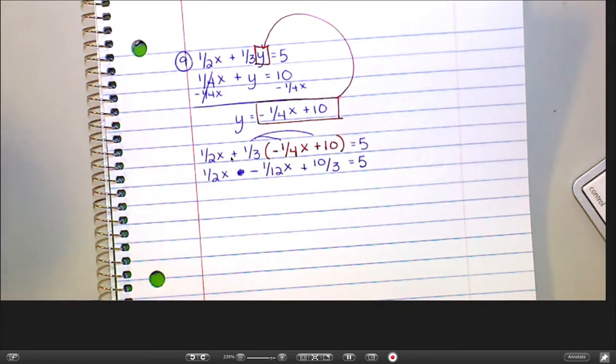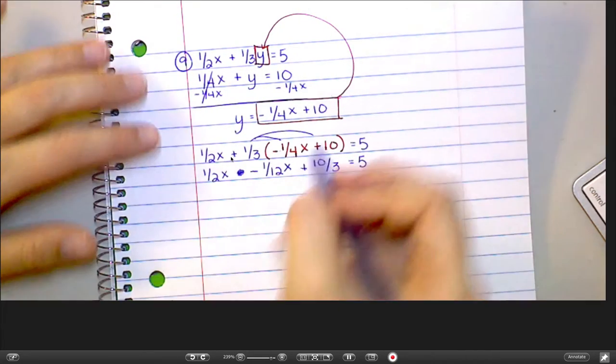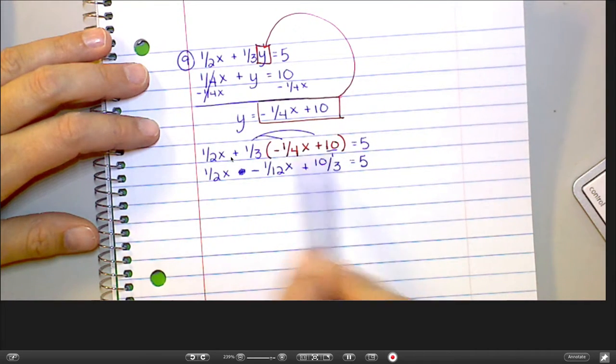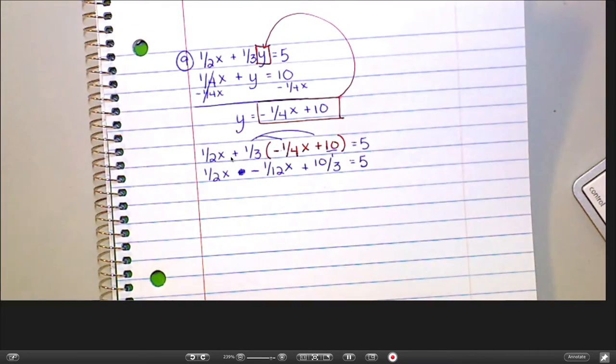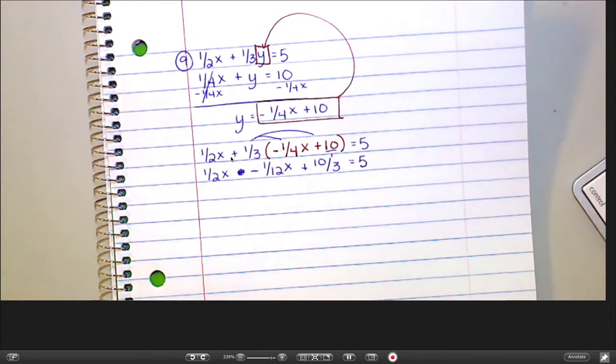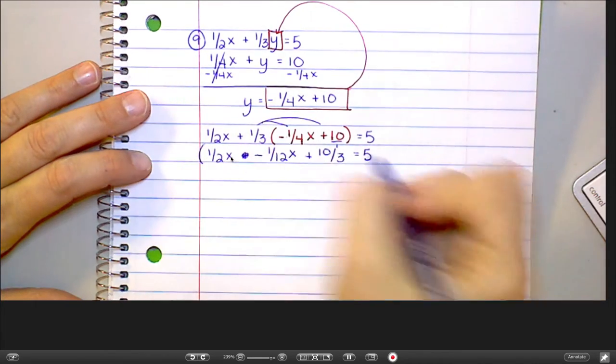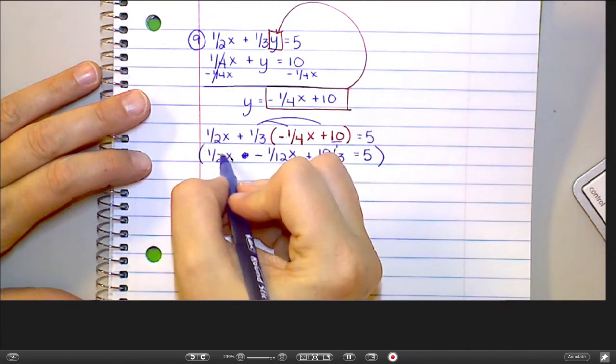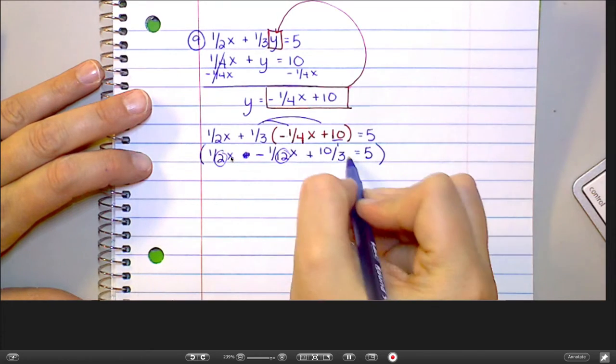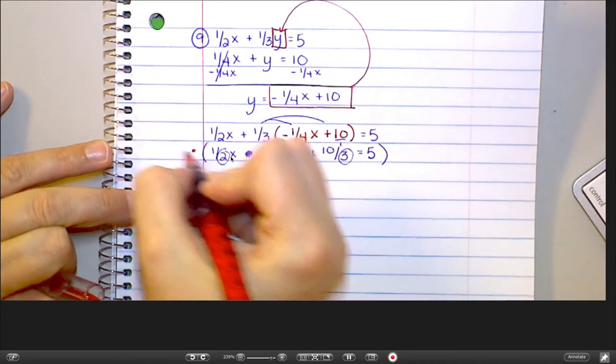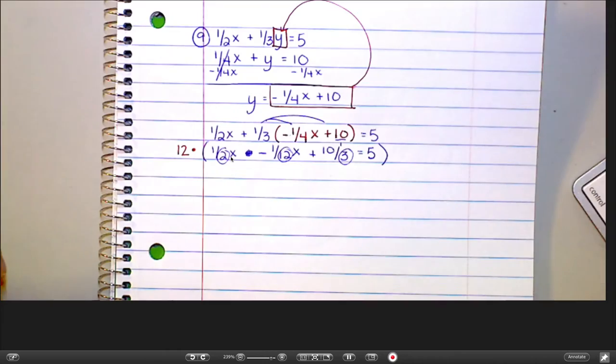Because this is really like 10 over 1. So if you multiply straight across, 1 times 10 is 10 and 3 times 1 is 3. Now, this is where I'm going to get rid of those scary fractions and I'm going to take you back to something we learned in the first chapter. I'm going to find a common denominator. What do 2, 12, and 3 all go into? 12. They all go into 12. So I'm going to multiply everything in the equation by 12.